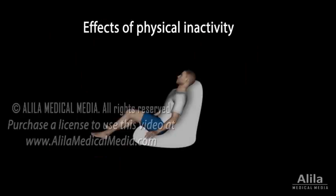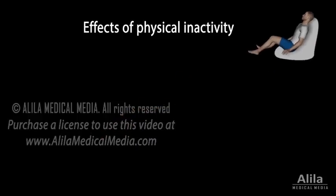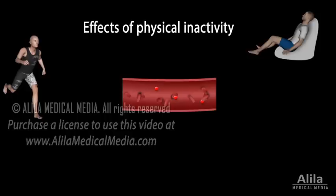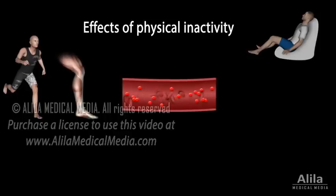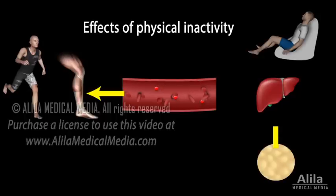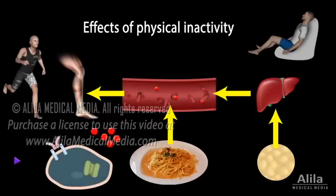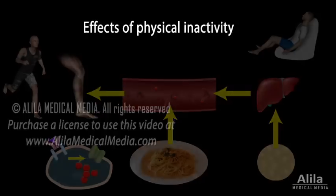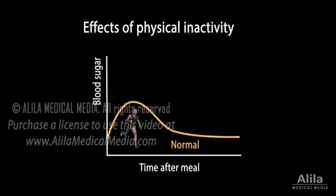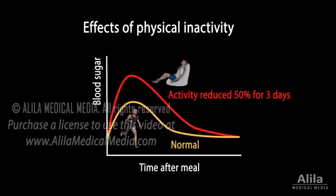Sedentary lifestyle, apart from having an indirect effect by causing weight gain, has its own direct impact on insulin resistance. Physical activity is required to maintain healthy blood sugar levels. Physical activity increases energy demand by the muscles, which consume glucose from the blood and subsequently from glucose storage in the liver and adipose tissue. High energy expenditure helps to clear up faster the spikes of blood glucose that follow every meal. High energy demand also produces better cellular response to insulin, increasing insulin sensitivity. Studies have shown that physical inactivity, even for a short period of time, results in consistently higher spikes of blood sugar after meals, which can trigger pre-diabetic changes in healthy individuals or speed up transition from pre-diabetes to diabetes.